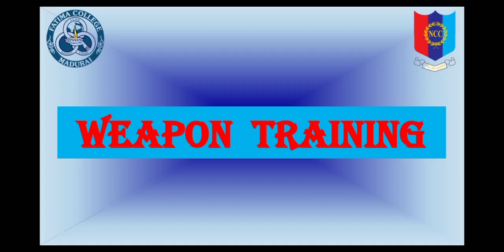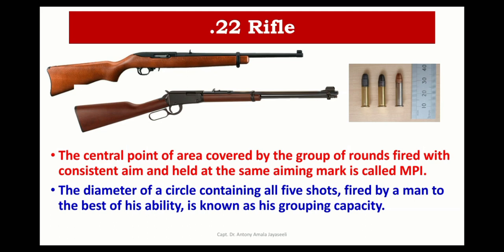Moving on to weapon training. For NCC cadets, the 0.22 rifle is used. There are two terminologies associated with weapon training: MPI — the mean point of impact — and grouping capacity. The central point of the area covered by the group of rounds fired by the cadet with consistent aim at the same aiming mark is called MPI. The diameter of a circle containing all five shots fired by a man to the best of his ability is known as the grouping capacity.